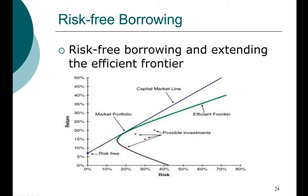Hello and welcome back again. This is a recap of what we have seen earlier. This is the investment opportunity set or the feasible assets — all possible investments, which can be combinations of stocks into portfolios or individual stocks. Out of all these possible feasible investment opportunities, we identify the minimum variance or minimum risk portfolio, and then we identify the portfolio that has the highest return at any given level of risk, which we call the efficient frontier.